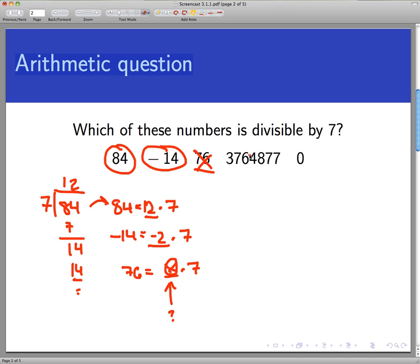3,764,877 is also not divisible for the same reason. If you carry out the long division on this, it takes quite a lot of work to get through here. And I believe the remainder is 4. You do get a remainder and it's 4. So the remainder is not 0. Hence, that's not divisible by 7.